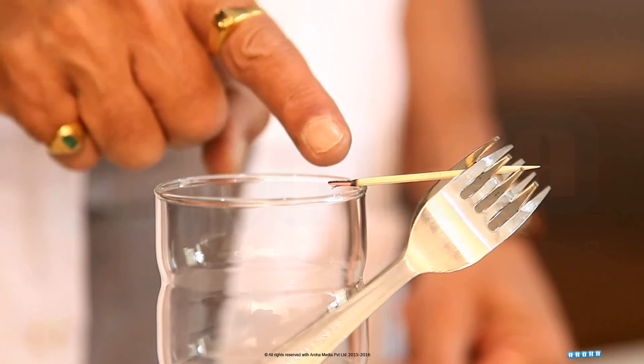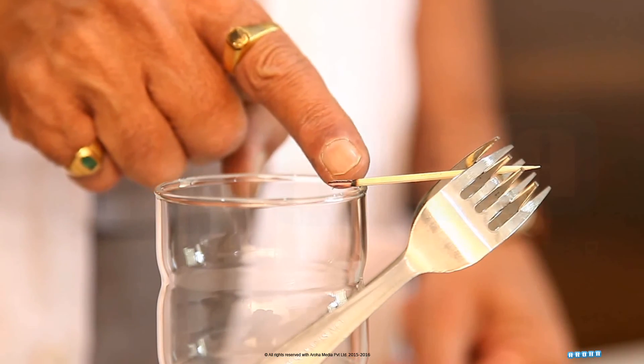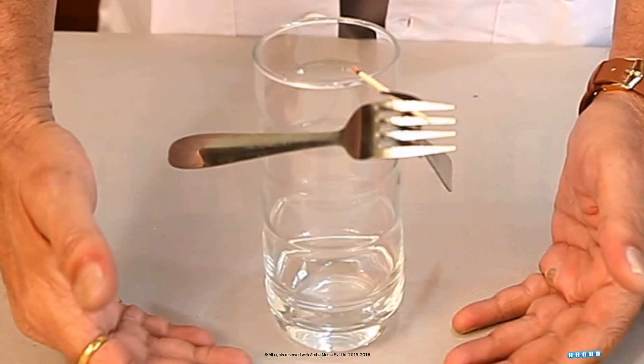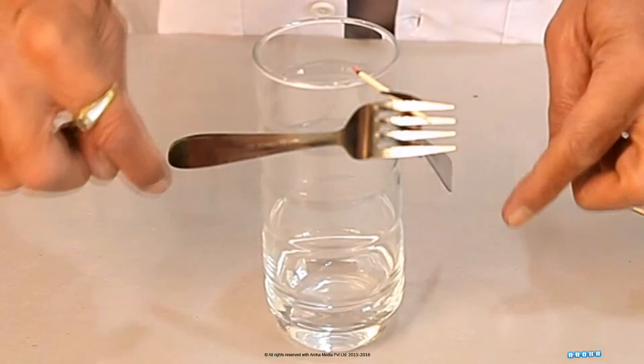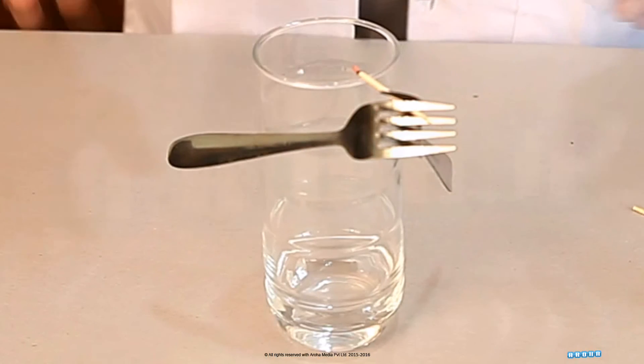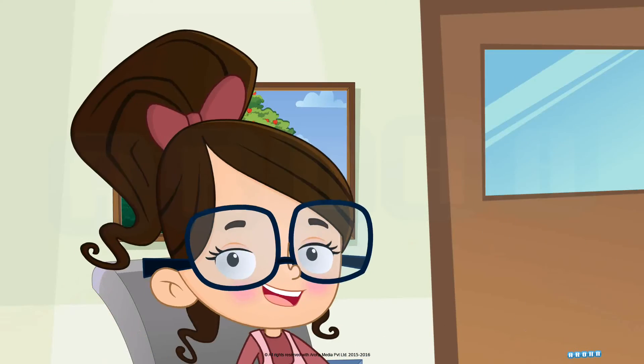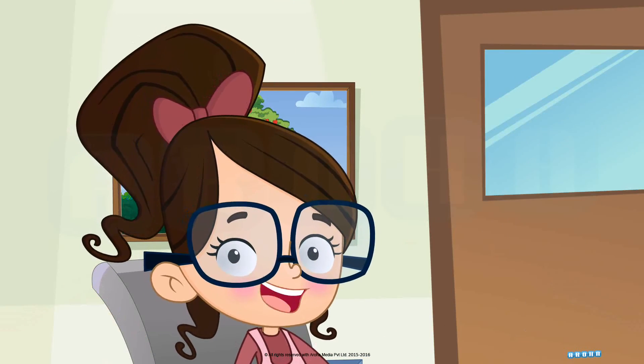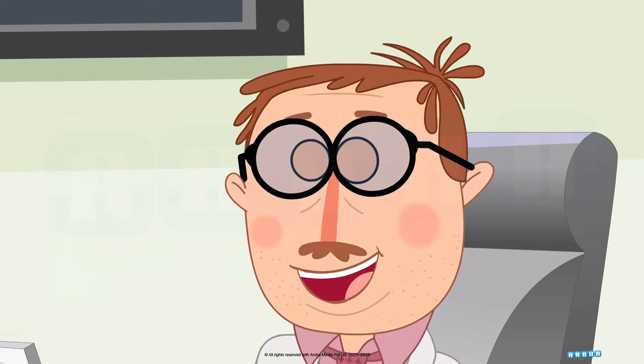And the toothpick does not fall down because this is the balancing and gravitational force point. Wow, thank you for explaining sir, now we understand. Okay, hey children.